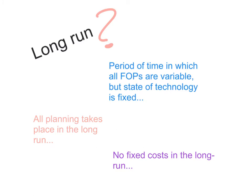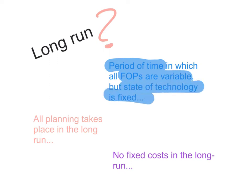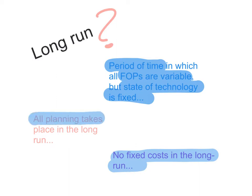A quick refresher: the long run in economics is the period of time where all factors of production are variable, but technology is fixed. You have no fixed factors of production, and therefore you don't have any fixed costs of production in the long run.